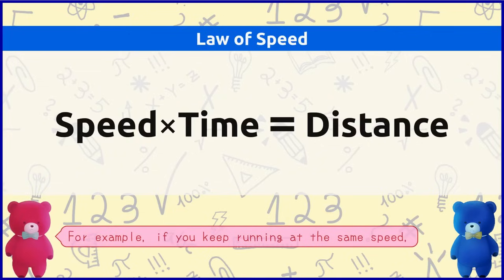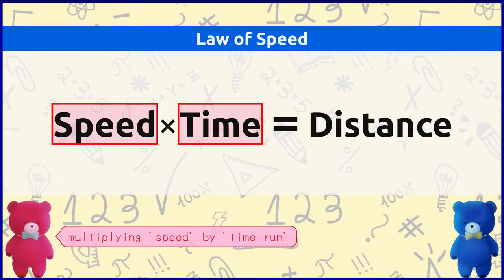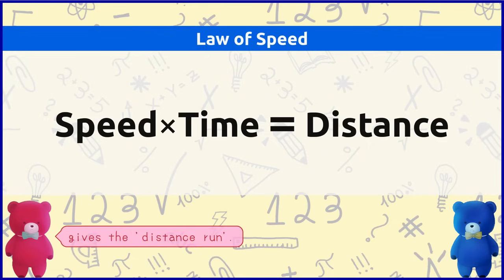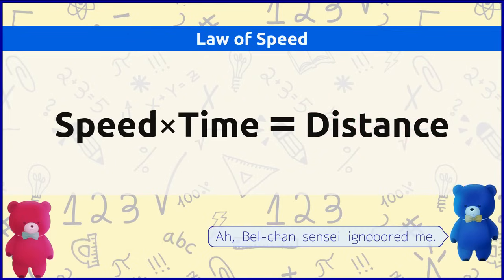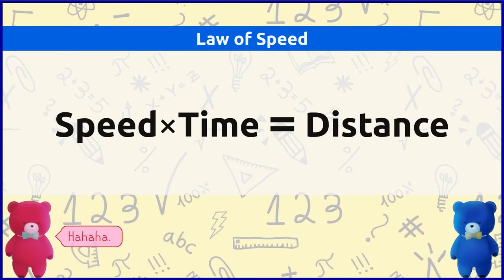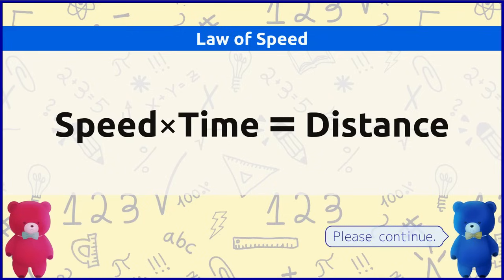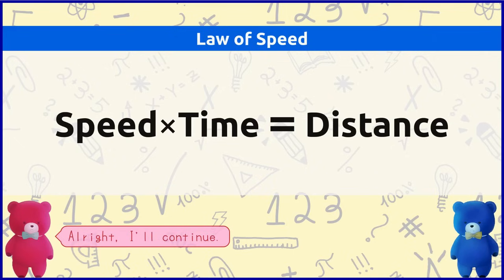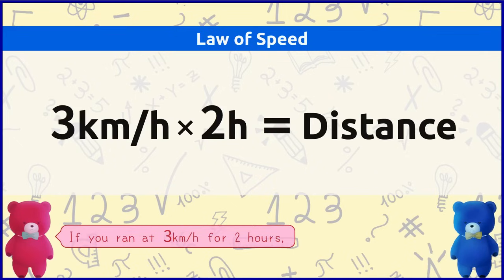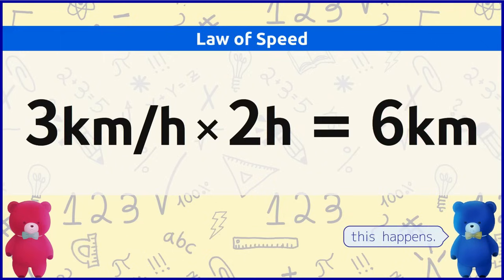For example, if you keep running at the same speed, multiplying speed by time run gives the distance run. If you run at 3km per hour for 2 hours, since you run 3km per hour in 1 hour for 2 hours, this happens. Yes, that's right.